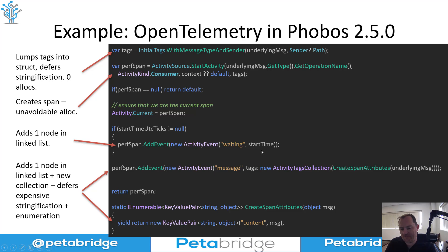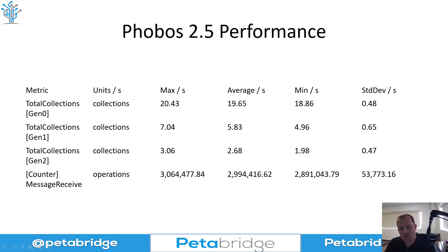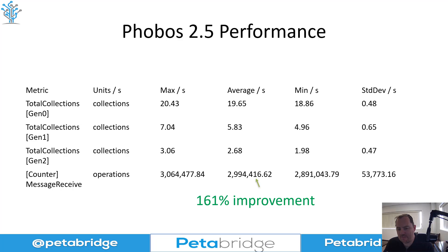All that expensive work happens instead in the telemetry pipeline, which runs on its own schedule completely independently from the rest of our application. Looking at the performance results between Phobos 2.5 and 2.3.1: we're now doing about 3 million messages per second instead of 1.1 million messages per second — roughly a 161% improvement. Instead of operating at one-sixth of baseline performance, we're at one-half. That's a pretty substantial improvement in exchange for free telemetry.